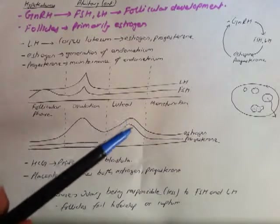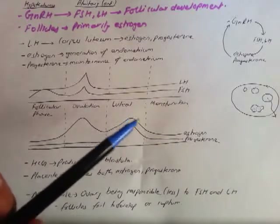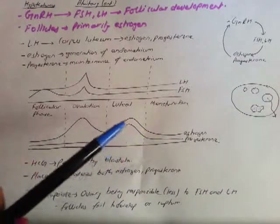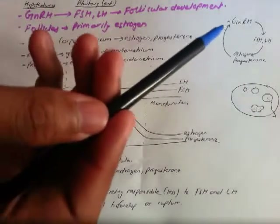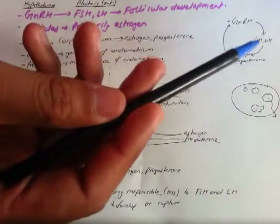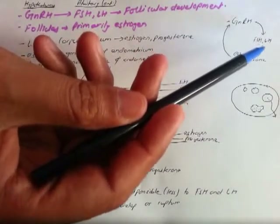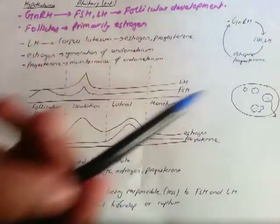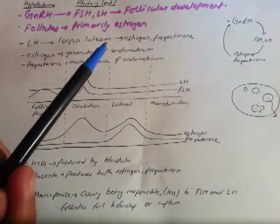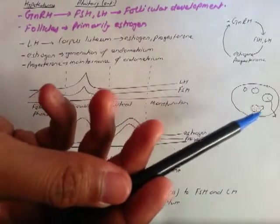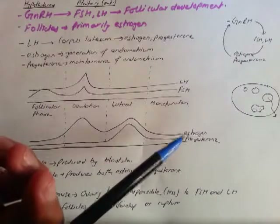This high level of estrogen and progesterone maintains the endometrium. But as these levels rise, they cause negative feedback, reducing FSH and LH. Once LH drops, there's nothing to maintain the corpus luteum, and the corpus luteum breaks down.